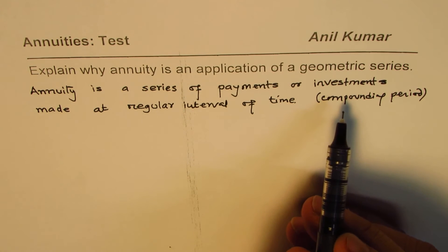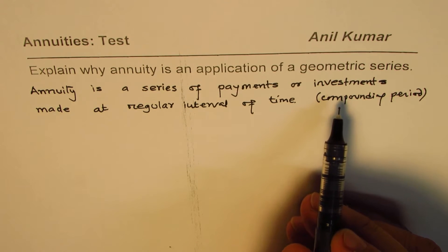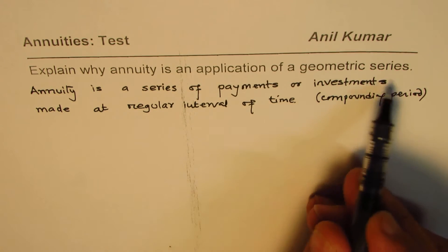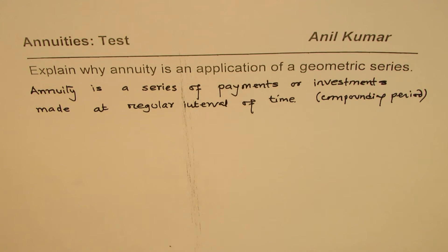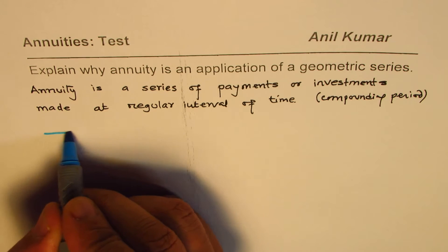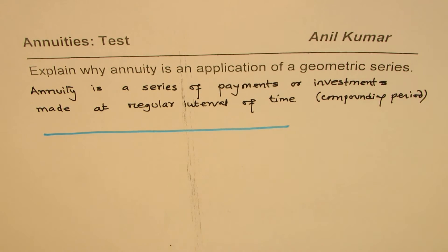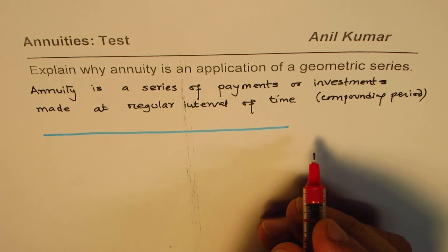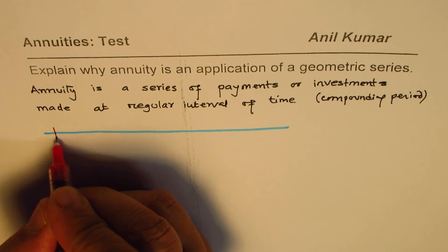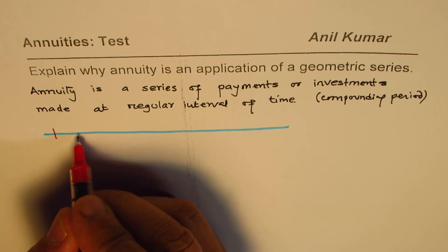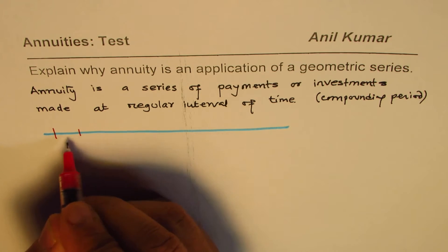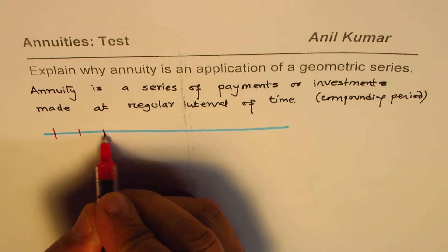Let's look into the investment aspect. Let me sketch a timeline to understand this method and see how it relates to a geometric series. I'm giving an explanation that's good enough from a test point of view. Let's say you start making investments one year from now — year one, year two, year three, like this.